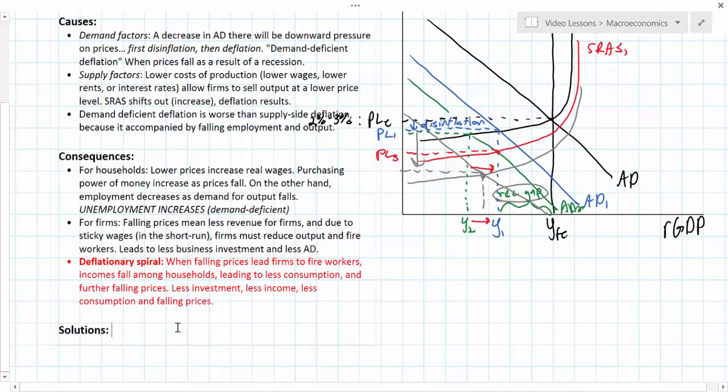So that brings us to the question about what are some possible solutions to deflation. If the existence of deflation and the possibility of deflationary spirals is so devastating to an economy, then policymakers must be equipped with some tools to fight deflation if it exists. We'll talk about demand-side policies first.